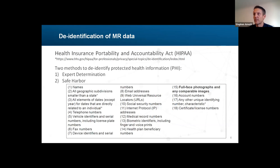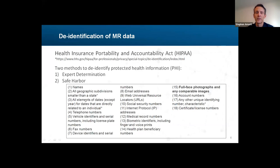Two ways to de-identify data: one is through expert determination, where somebody versed in statistical and scientific methodology documents that there's a very low risk of revealing patient identity. The more popular option is the safe harbor method, where you remove a list of direct and indirect identifiers — obvious things like full names, addresses, license plates. One thing important for MR data is the identifier covering full face photographs and any comparable images.